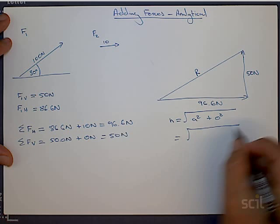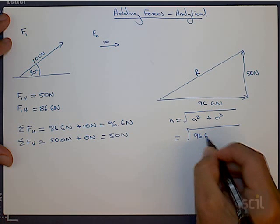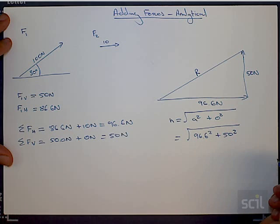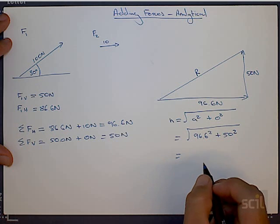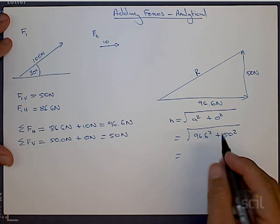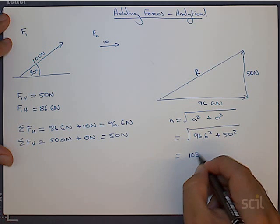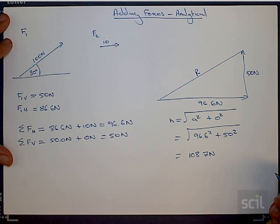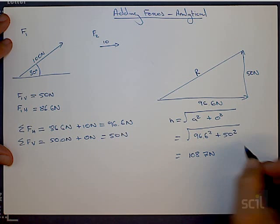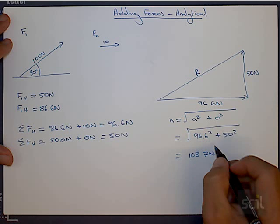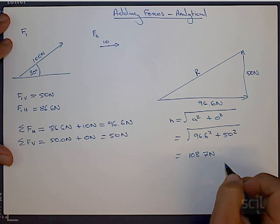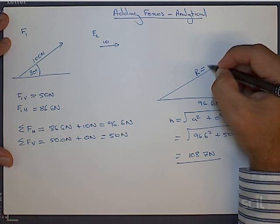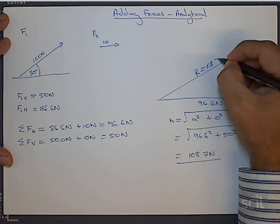And in this case, that is equal to 96.6 squared plus 50 squared. This gives us a total of 108.7 Newtons. Obviously, you have to use your calculators a bit to work that out, but it shouldn't be too hard. You just square 96, add it to the square of 50, and then square root the answer.